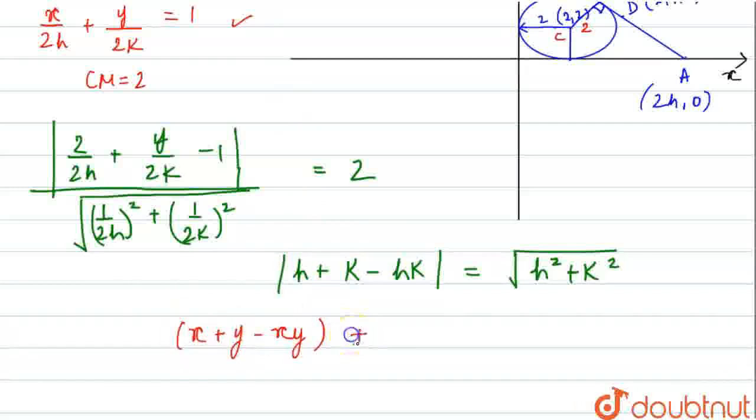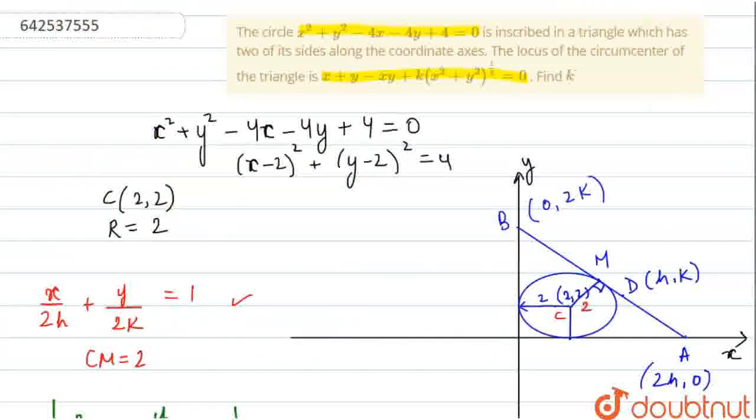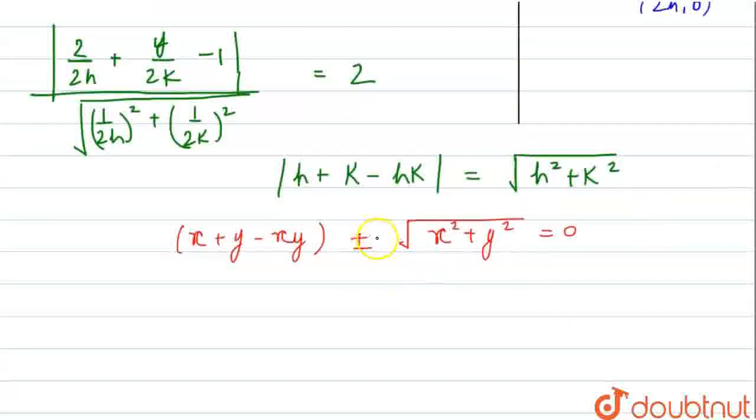The equation will be x plus y minus xy plus minus under root of (x squared plus y squared) equals 0. This is the locus of the circumcentre. We will compare it to the given circumcentre equation. So this is x plus y minus xy plus K times under root of (x squared plus y squared). After comparing this equation, we get K equals plus minus 1.